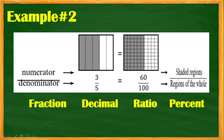Let's proceed to example number 2. We have 3 fifths — 3 parts are shaded out of 5 parts. The equivalent fraction for 3 fifths is 60 hundredths. This gives us 100 parts to easily get the decimal numbers, ratio, and the percent. To make this an equivalent fraction with 100 parts, multiply both numerator and denominator by 20: 3 times 20 is 60, and 5 times 20 is 100. So we have 100 equal parts.